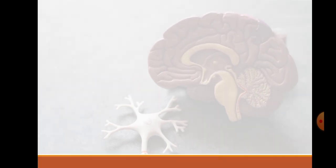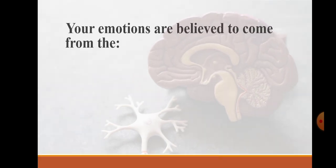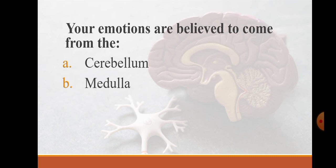Your emotions are believed to come from the cerebellum, medulla, amygdala, or heart. Amygdala is a part of brain that controls our emotions.